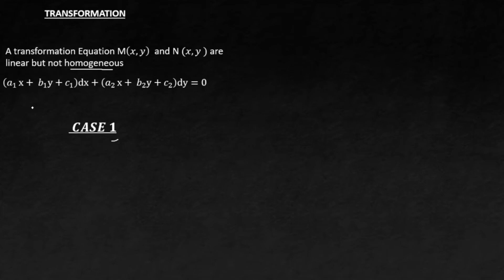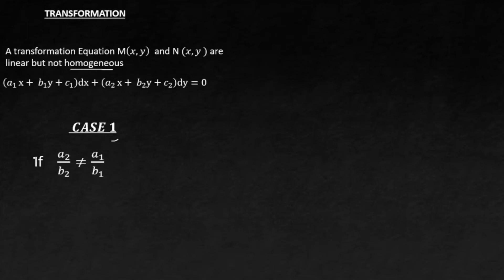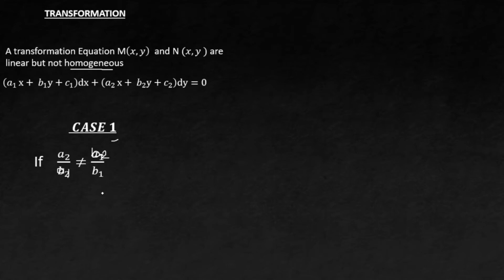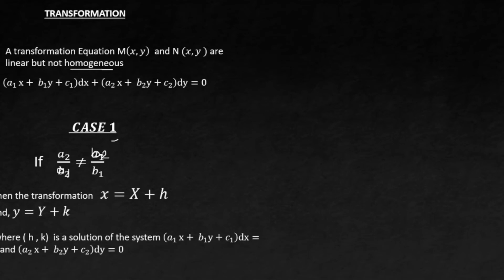Case one: you have to check the ratio a2 over a1, and also the ratio b2 over b1, then equate them. If you realize that they are not equal — that is, a2 over a1 is not equal to b2 over b1 — then you are dealing with a Case 1 problem.